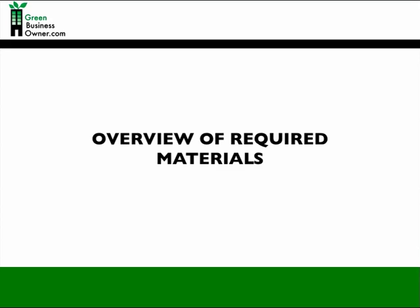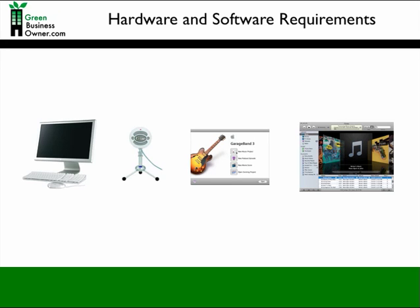Before you start podcasting, you're going to need all the right materials. You'll need a computer, a high-speed internet connection, an external mic, GarageBand software, an RSS feed, and an iTunes account and the iTunes software. If you are not a Mac user, don't worry — you can use Audacity instead of GarageBand. Otherwise, all other equipment will remain the same.